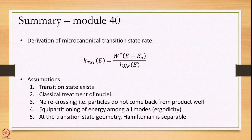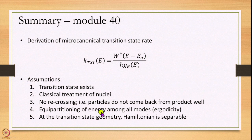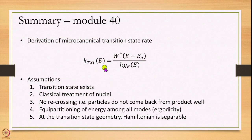The list of assumptions is very similar to what we had before: a transition state exists, nuclei are treated classically, there is no recrossing, and all energy states are equally accessible — that is, ergodicity is assumed. A final assumption is that the Hamiltonian is separable at the transition state geometry. Following these assumptions, we derive the expression for transition state theory at constant energy. Thank you.